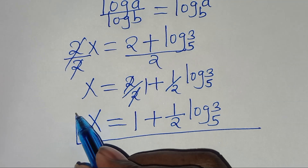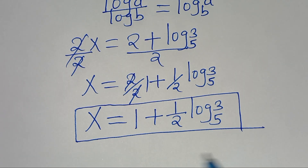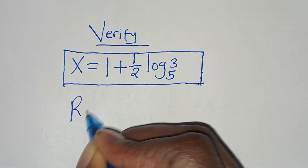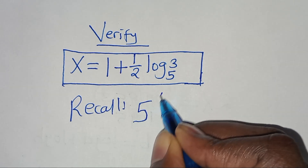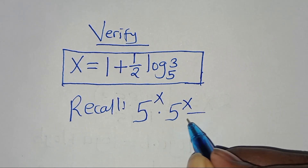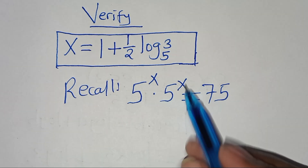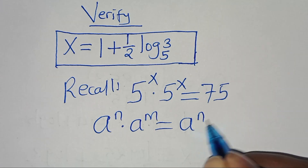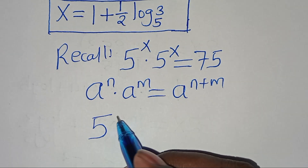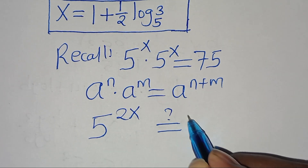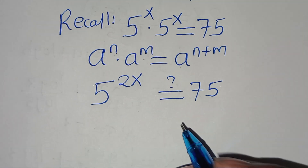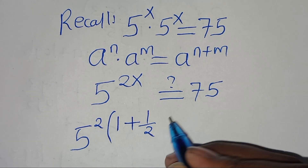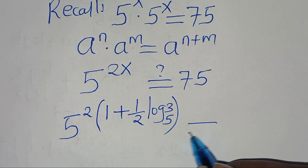Now let's verify that x equals 1 plus one-half log base 5 of 3 satisfies the equation. Recalling that 5^x times 5^x should equal 75, and applying the exponential property, this equals 5^(2x), which should equal 75. Substituting x, we have 5 raised to the power of 2 times (1 plus one-half log base 5 of 3), which should give us 75.